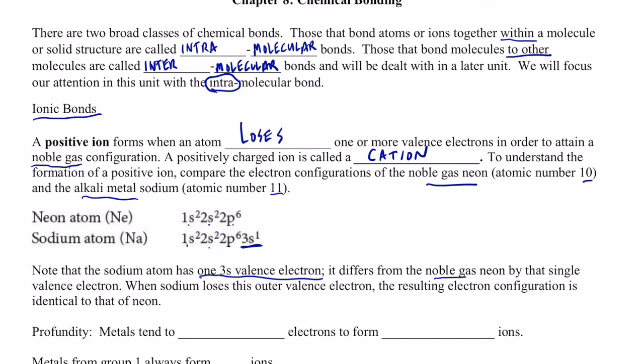So it's obvious here that sodium has one 3s valence electron. It differs from the noble gas neon by that one single valence electron. When sodium loses this outer valence electron, the resulting configuration is identical to that of neon. So if you can imagine that this electron is removed, so pretend it's not there any longer, wouldn't the configuration for the sodium ion be the same as the configuration for the neon atom. All atoms tend to gain or lose electrons to become like a noble gas. There's something very stable about a noble gas configuration. So when this 3s1 electron is lost, the sodium atom becomes the sodium ion, the cation Na+.